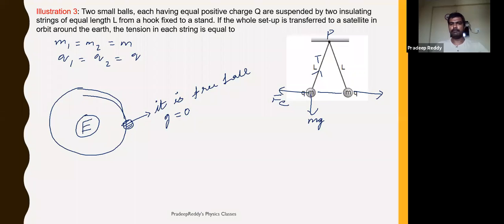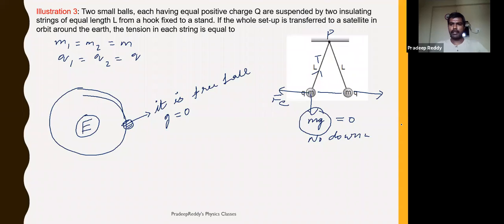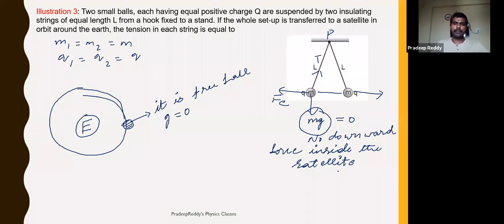When you place these two charges inside the satellite, since the gravitational acceleration becomes zero, there will be no downward force acting on the masses inside the satellite. As a result, gravitational force is not experienced by these two masses, and there is only one force now acting between them — that force is the electrostatic force. Because of that electrostatic force, these two masses will be pulled outward.